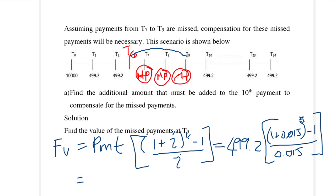Doing that calculation, we get the value of the missed payments at time T9 is equal to 1,520.30 rands.